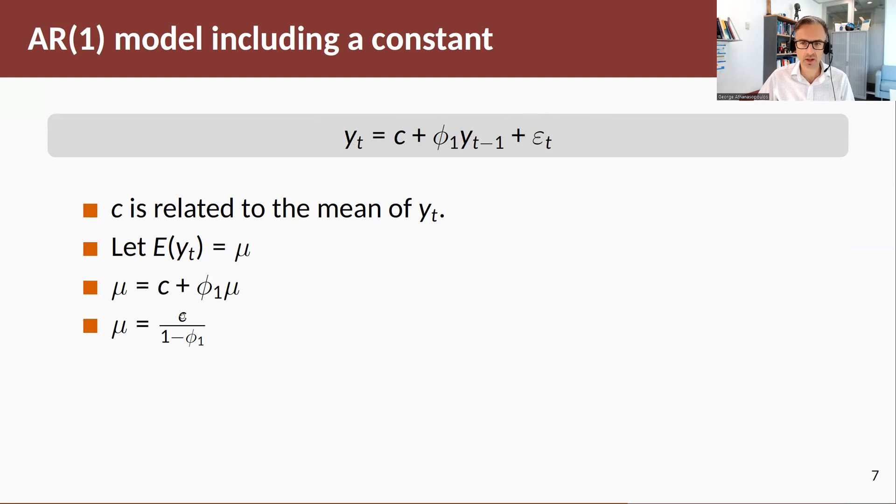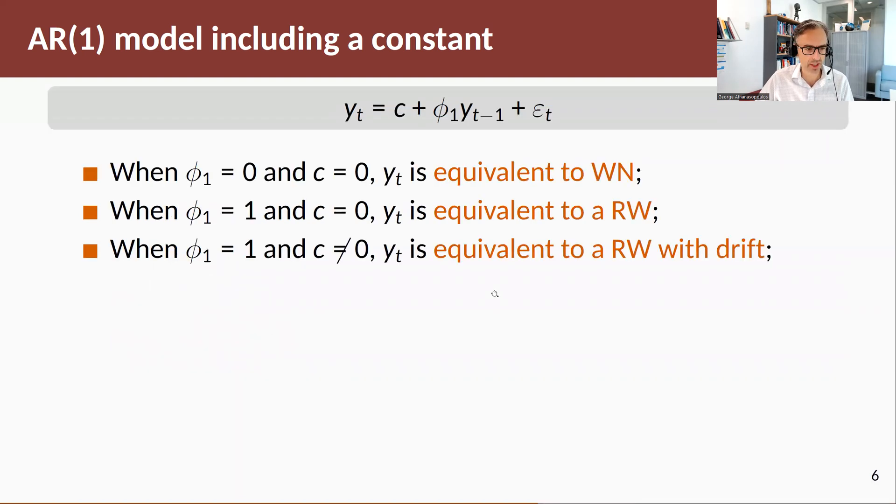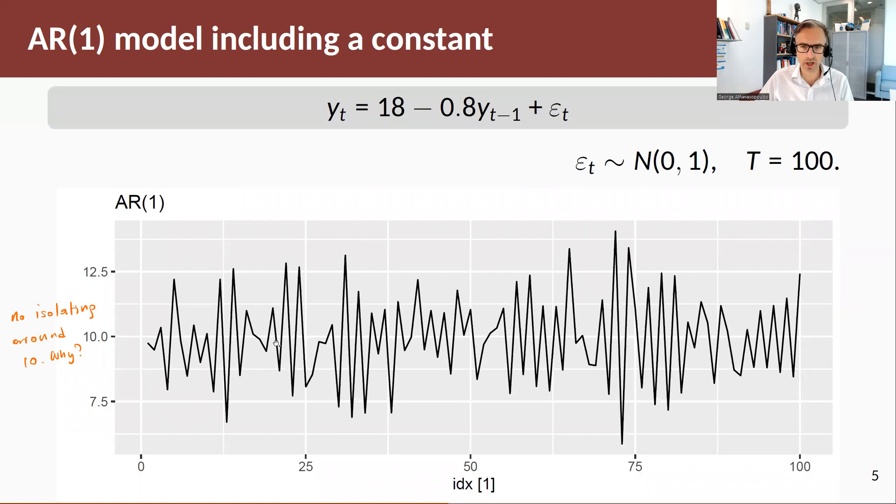In our example, c was 18 and our autoregressive coefficient is -0.8. Hence, the mean equals 10, and we get the oscillating behavior around 10.